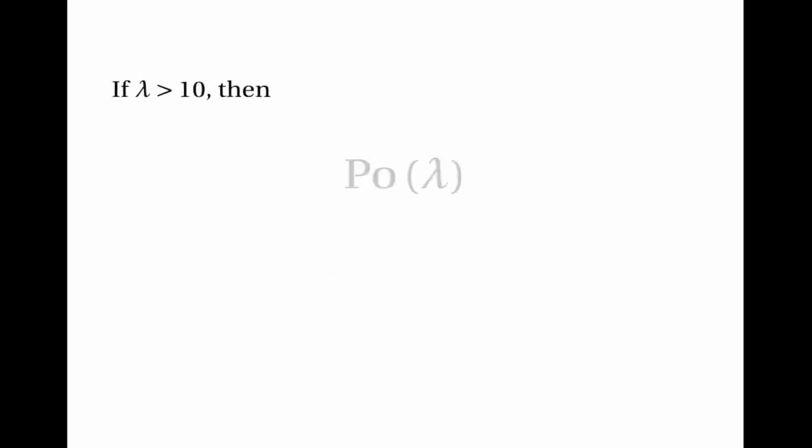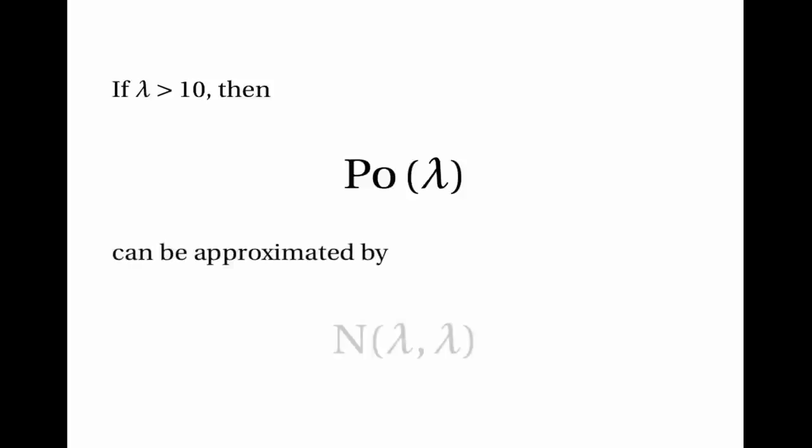That's the normal approximation to the Poisson distribution. The main thing to remember: when lambda is more than 10, the Poisson distribution with parameter lambda can be approximated by the normal distribution with mean lambda and variance lambda. That's the end of my video about using the normal distribution to approximate the Poisson distribution. I hope you found it helpful. Thank you very much for watching.